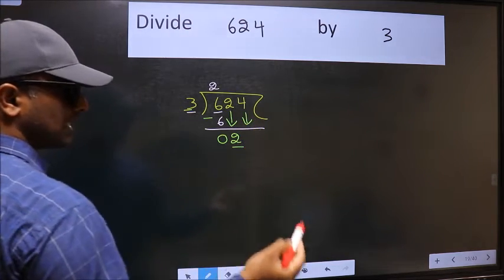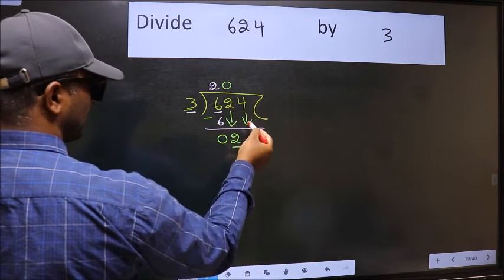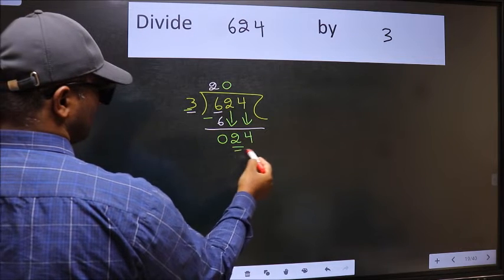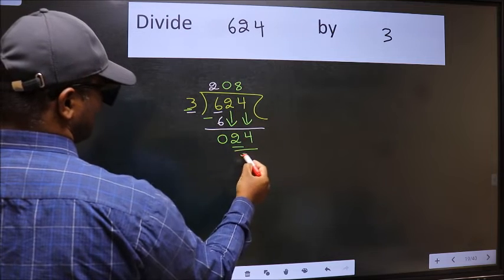And the rule to bring down second number is we should put 0 here. Then only we can bring down this number. Now 24. When do we get 24 in 3 table? 3 8's 24.